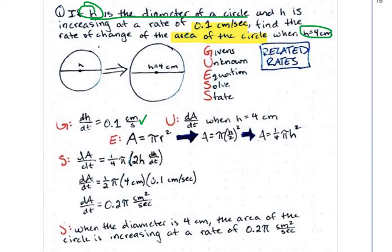Now, what are we trying to find? We're asked to find the rate of change of the area of the circle. So obviously we're wanting to find the rate of change of the area with respect to time. That's dA/dt, the derivative of the area with respect to time, but specifically when h is equal to 4 centimeters.